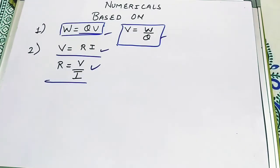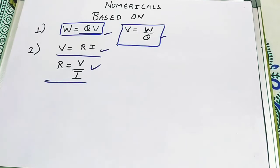In the previous class we discussed about current and its cause, and we saw the properties of charge — what is electric charge, electricity, electric circuit, voltage, Ohm's law, resistance, and the factors on which resistance depends. We are going to jump to the questions now.